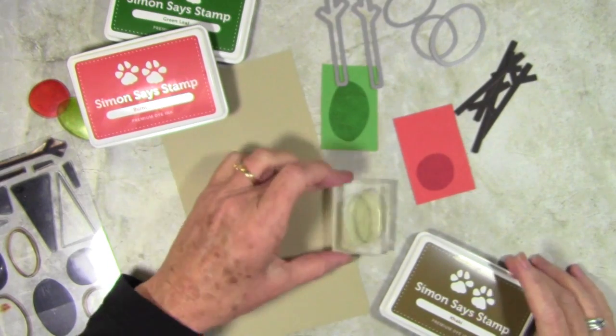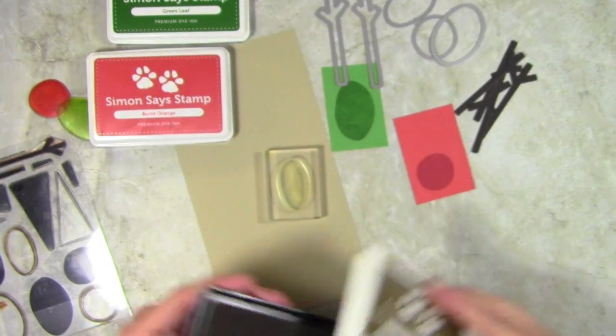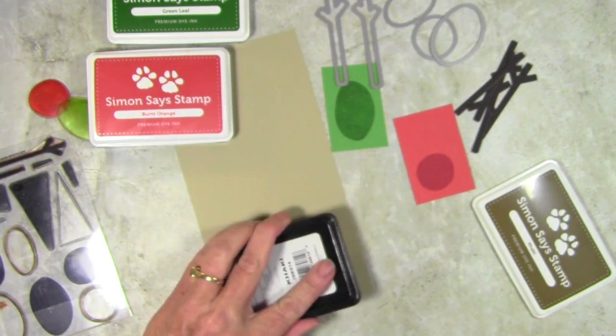For my final tree, I'll be using the khaki ink and also the khaki card stock. For this one, I've chosen a smaller oval from the same set.